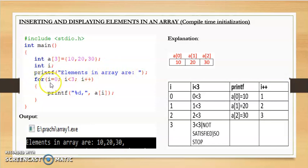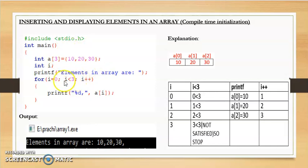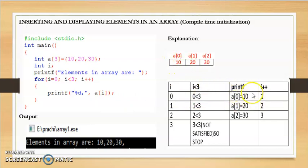In the for loop, we initialize i to 0 because array values always start from 0. Then it checks i less than 3, because we need to print 3 elements. So first i is 0, it checks is 0 less than 3 — condition satisfied — so it prints a[i], which is a[0], and a[0] value is 10. So it prints 10.